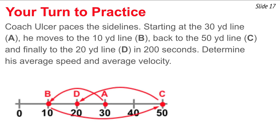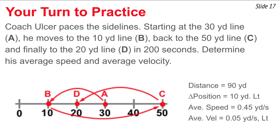Here's what your diagram would look like if drawn correctly: the coach starts at the 30-yard line, moves to the 10-yard line, then from the 10 to the 50, and from the 50 back to the 20. The overall distance traveled is A to B (20 yards), plus B to C (40 yards), plus C to D (30 yards) — a total of 90 yards. The overall change in position from A to D is 10 yards to the left. Dividing by 200 seconds gives your average speed and average velocity — be sure to indicate direction on the average velocity.